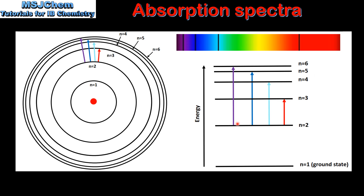And when an electron transitions from n equals 2 to n equals 6, the energy absorbed corresponds to the frequency or wavelength of violet light. Because the electrons are absorbing energy as they transition from lower to higher energy levels, we see black lines on a colored background in an absorption spectrum. The black lines correspond to the frequency or wavelength of visible light that's been absorbed by the electron as it transitions from lower to higher energy levels.